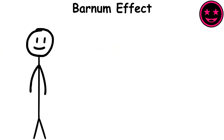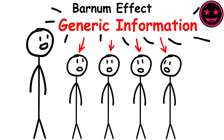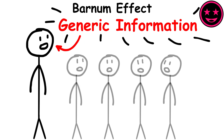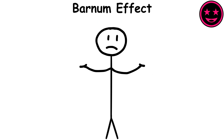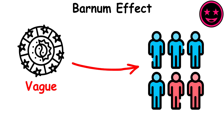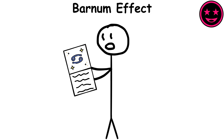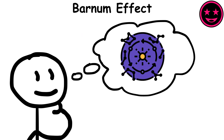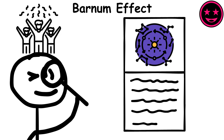Barnum effect. This describes when individuals believe that generic information, which could apply to anyone, applies specifically to themselves. Even though it is well known that horoscopes are intentionally vague to appeal to as many people as possible, some are still amazed at how perfectly these descriptions apply to themselves. The Barnum effect tricks us into believing that a particular horoscope was meant for just us, encouraging us to find non-existent parallels between the text and our own lives.